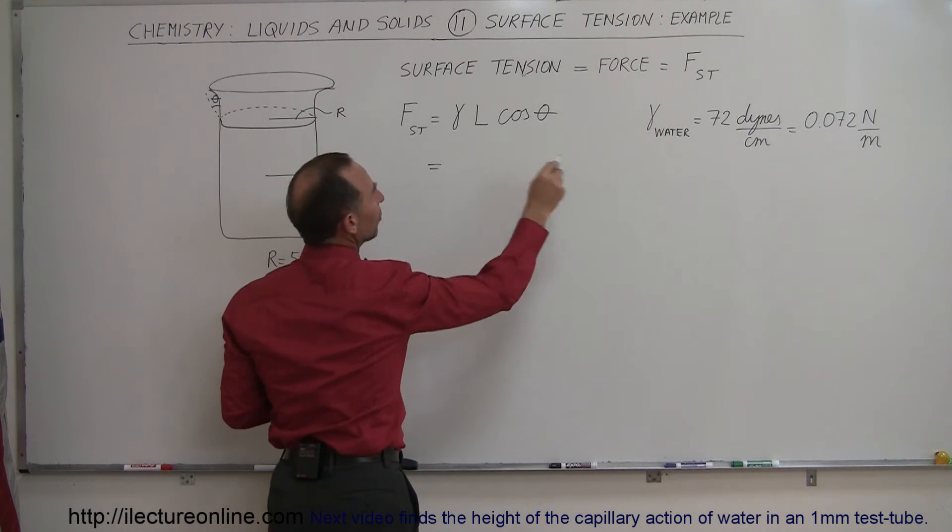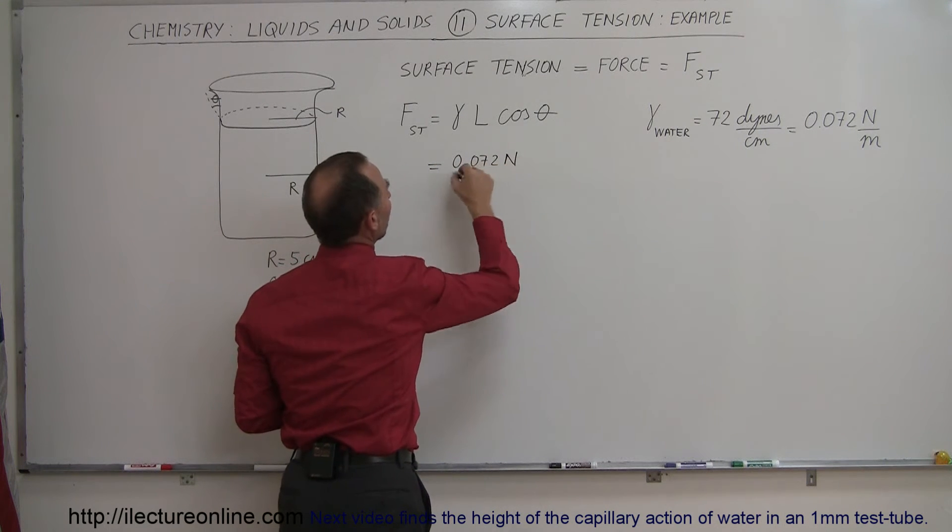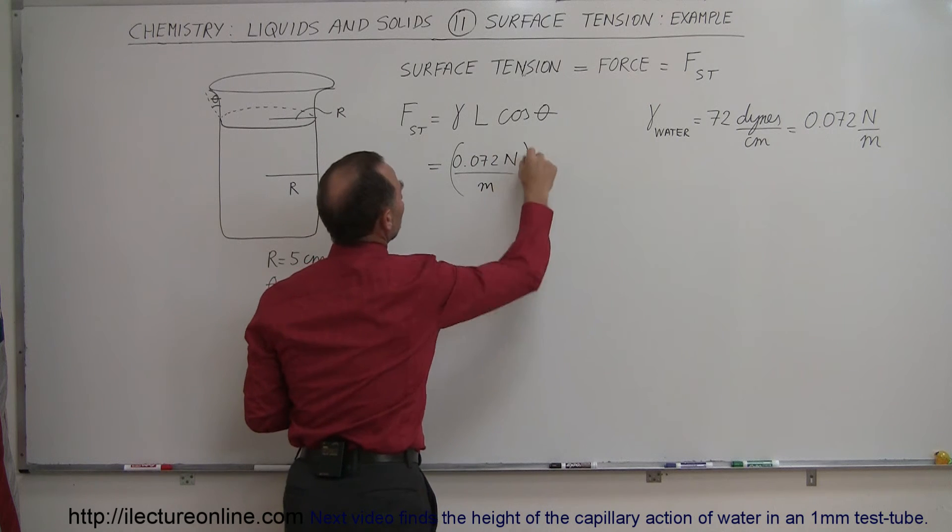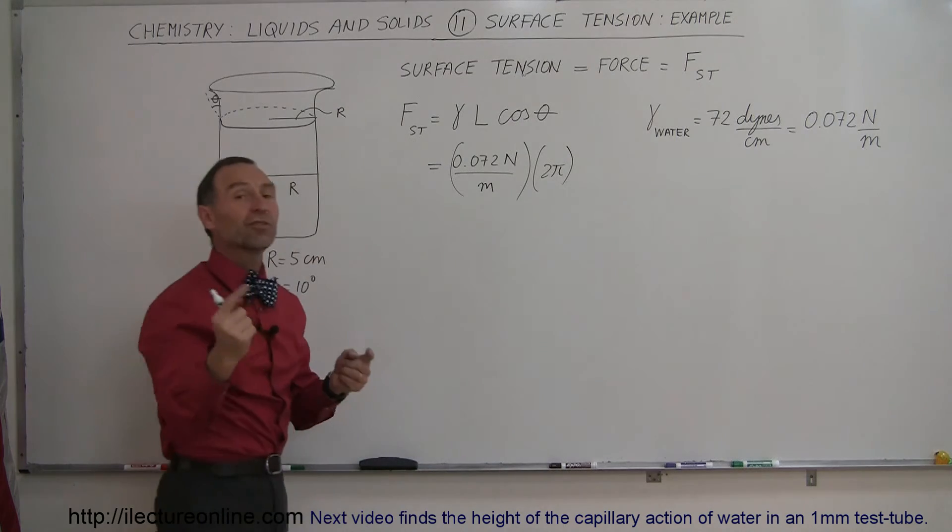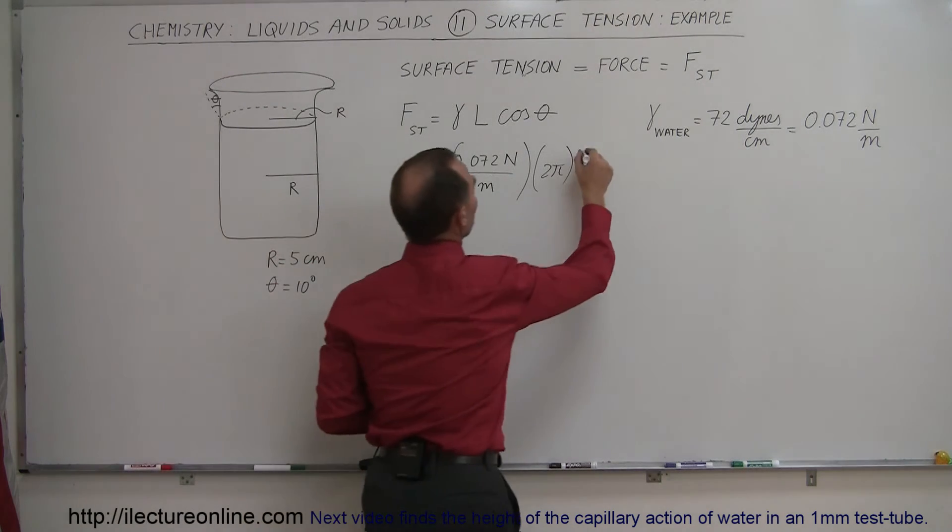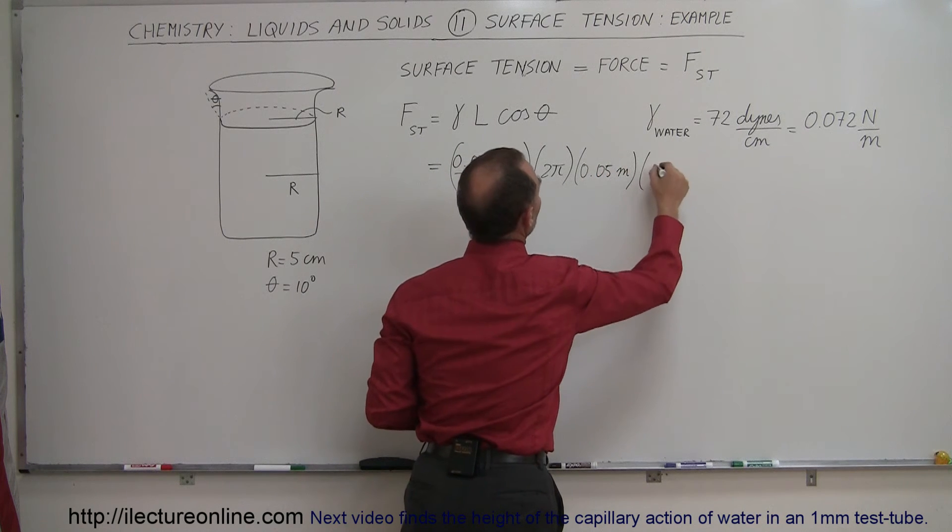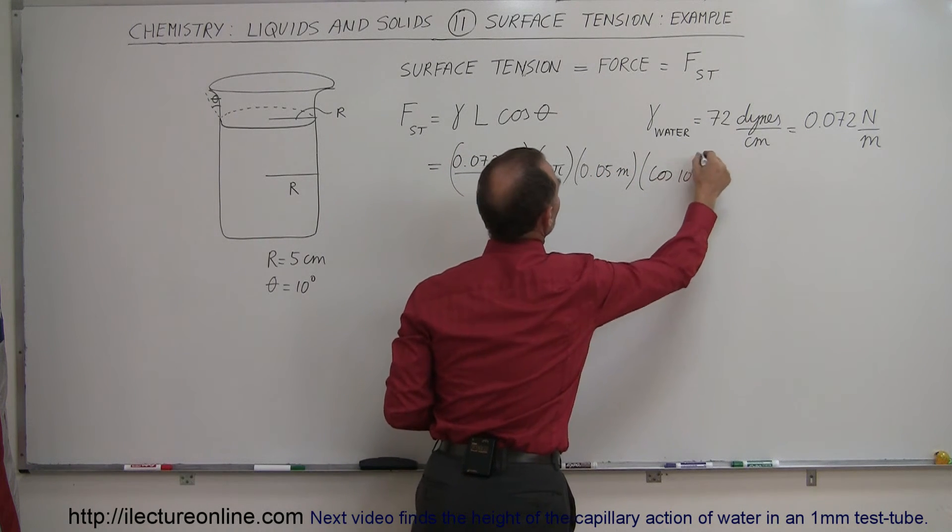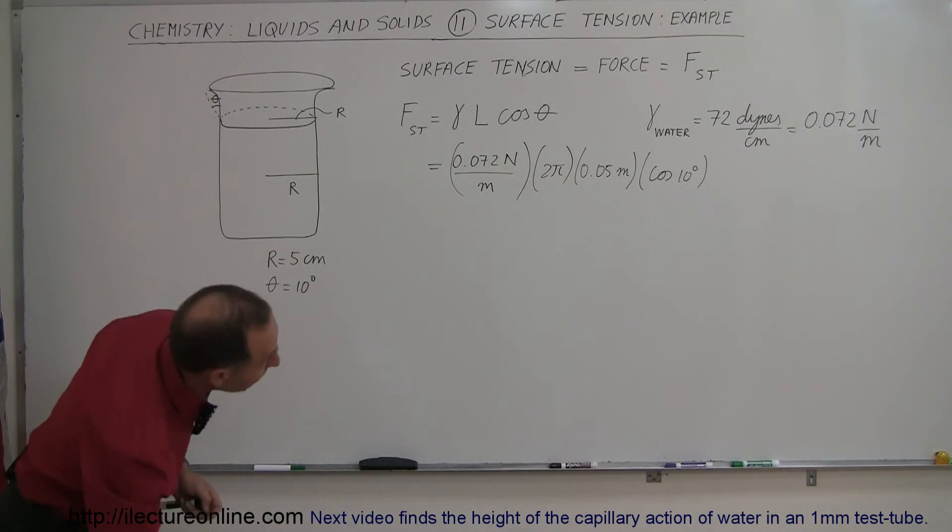So we have the coefficient which is 0.072 newtons per meter, multiply times the length which is 2π times the radius, because the circumference of the beaker is 2π times the radius. The radius is 5 centimeters, which is 0.05 meters. And then we multiply times the cosine of 10 degrees, which is almost 1, so it doesn't really matter when it's a very small angle like that.